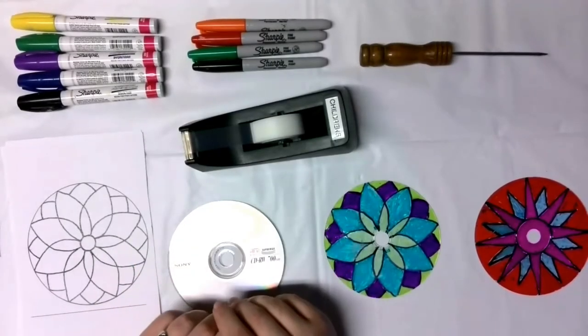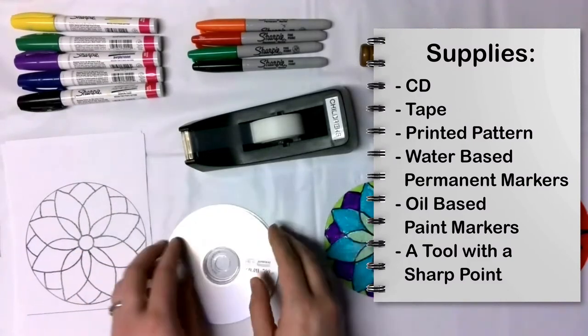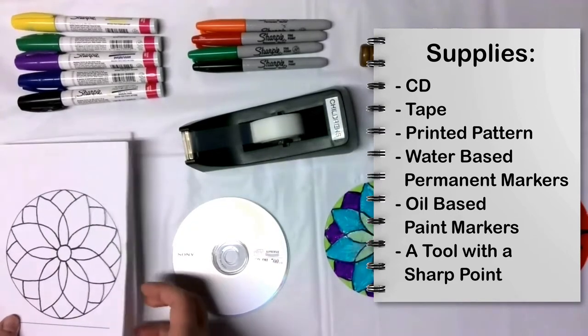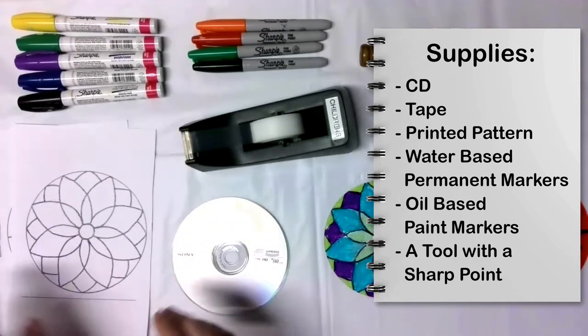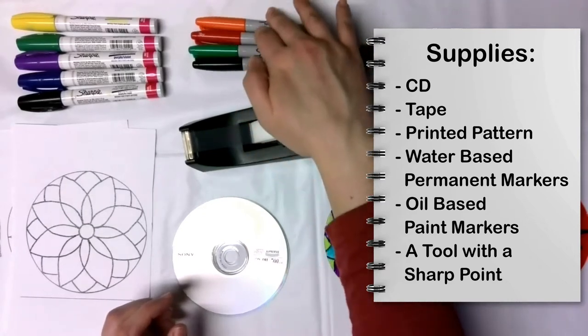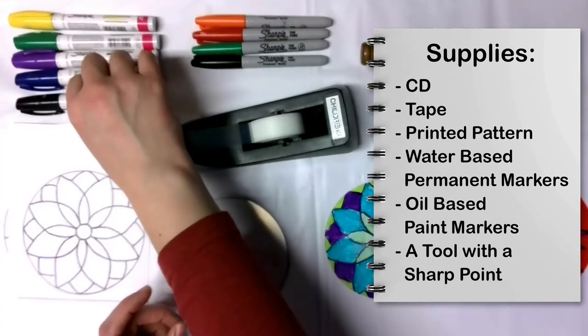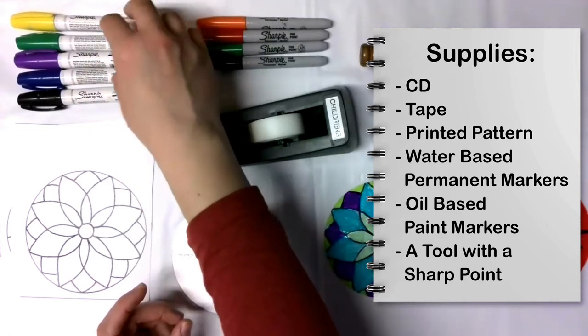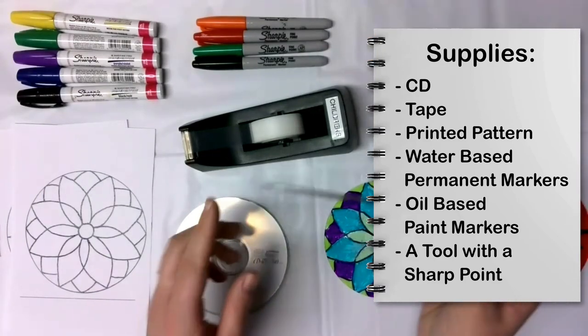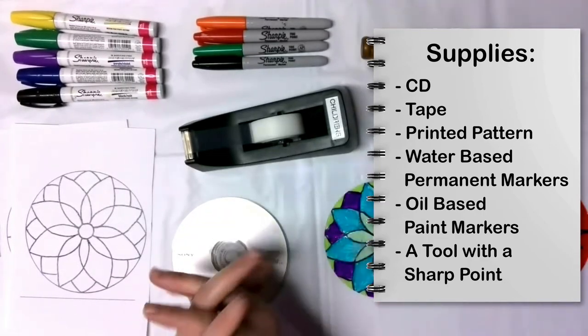So for CD Suncatcher art, what you will need will be any old CD, as you can tell here. You will also need tape, some type of printed pattern. I have two types of printed patterns here. You will need water-based permanent markers, so one black one and then any assorted colors of water-based permanent markers. Then also a black oil-based paint marker and assorted colors of oil-based paint markers. And also you will need a tool that has a sharp point. So this particular one that I have here is an awl, it's got a pointy end, but you could also use a screwdriver.